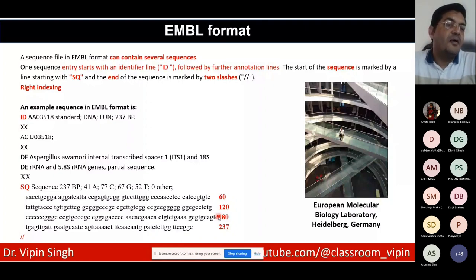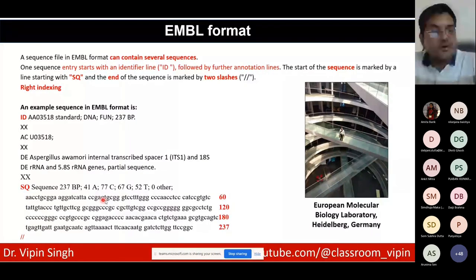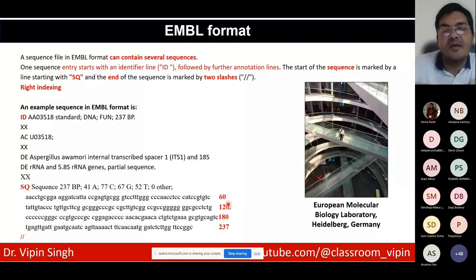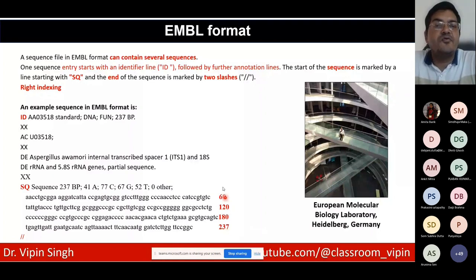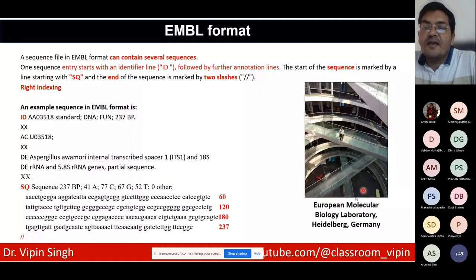The EMBL format has its own fields. The sequence begins with the 'SQ' line followed by a one-line annotation, then the sequence again in blocks of 10 nucleotides, with 60 nucleotides per line and indexing on the right side — 60, 120, 180, and so on. The EMBL format originates from the European Molecular Biology Laboratory in Heidelberg, Germany, one of the major centers of bioinformatics in the world.